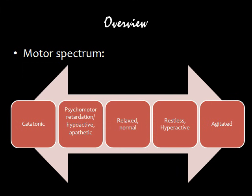Looking to the right side of the spectrum, beginning with relaxed or normal and progressing to agitated, relaxed or normal becomes restless or hyperactive, which is more activation in motor movement, and eventually becomes agitated — the more extreme end of the motor spectrum. As we go through this training, we'll begin with relaxed and normal, and move towards the left side of the spectrum, before eventually returning to the right side.